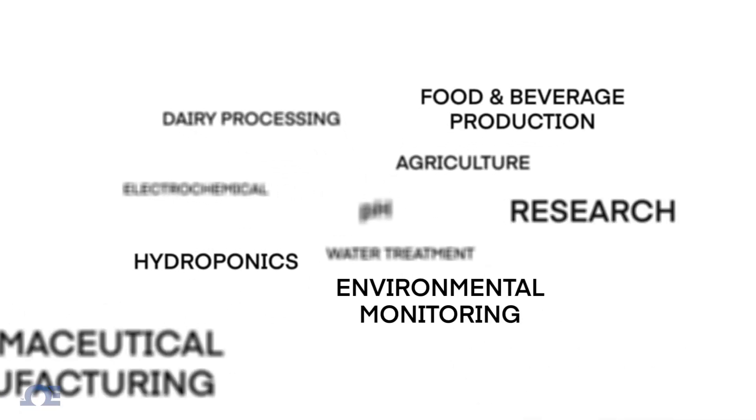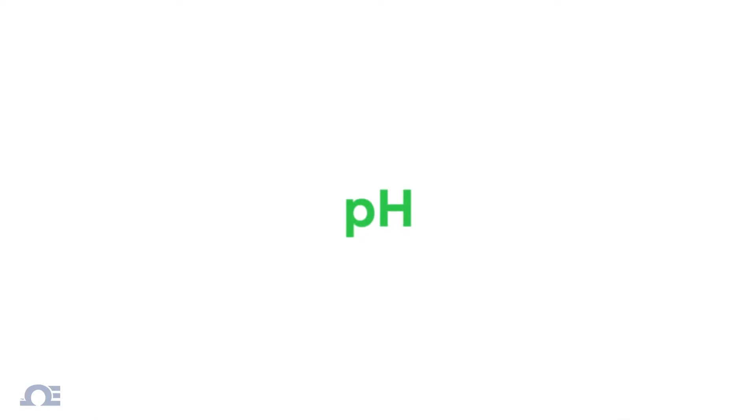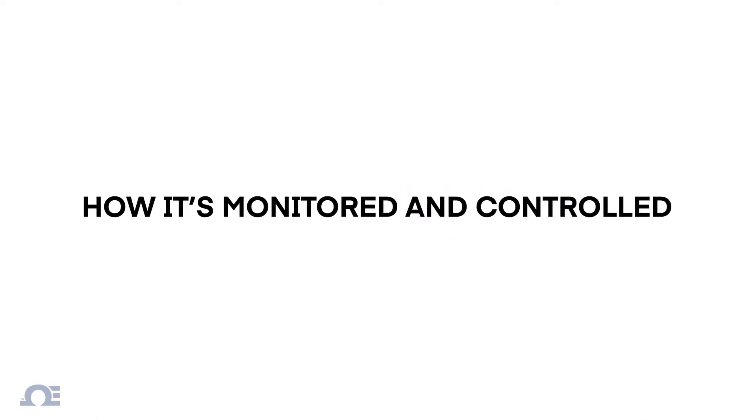In industrial applications, pH measurement and control is one of the most critical factors in many processes. In this video, we'll take a look at what pH is and how it can be monitored and controlled in a process.